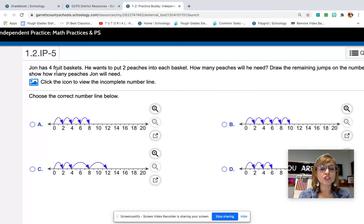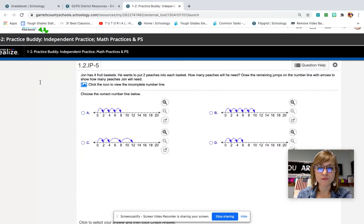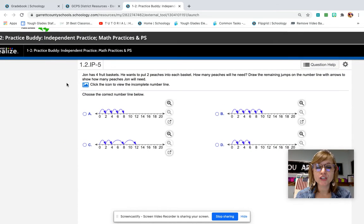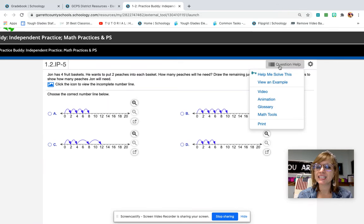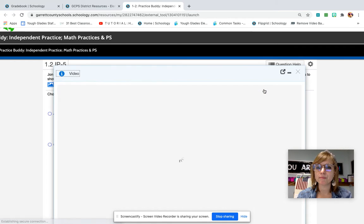Now he wants to put two peaches into each of his baskets, and so we need to find the number line that shows five jumps of two. But before we do that, let's watch this video that will help us.